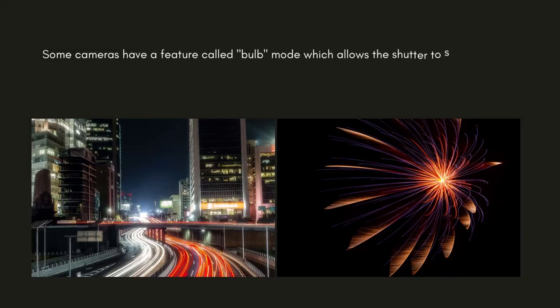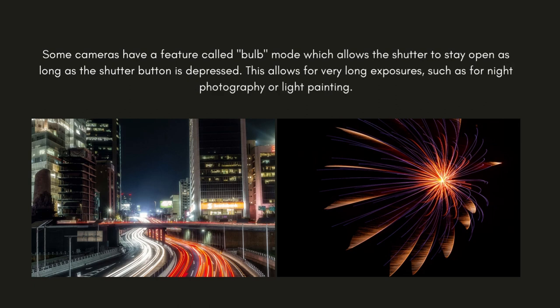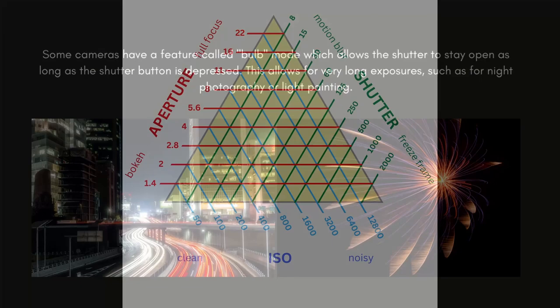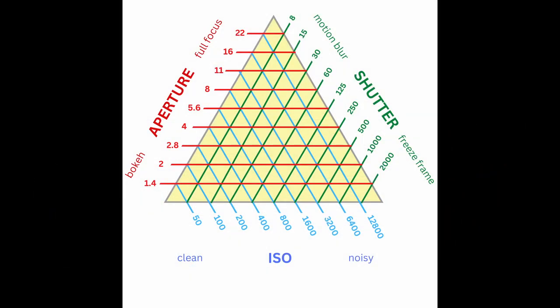Some cameras have a bulb mode, which allows the shutter to stay open as long as the shutter button is depressed, enabling very long exposures for night photography or light painting. It is important to understand the relationship between shutter speed, aperture, and ISO and how they work together to create a well-exposed image. It's also important to practice and experiment with different shutter speeds to understand how they affect the final image.